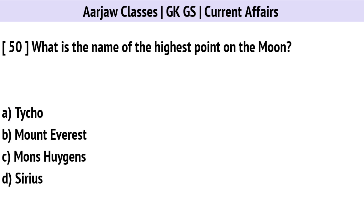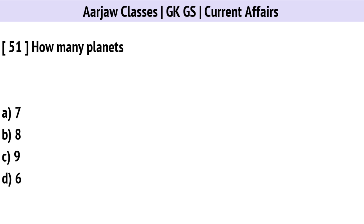What is the name of the highest point on the Moon? Correct option is C: Mons Huygens.